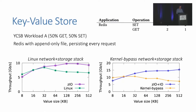Next, we run a key-value store with Redis. We run YCSB workload A with 50% get requests and 50% set requests. Redis is configured to use an append-only file and persist data after every request. Set requests do six copies in total and get requests do three copies in total. Zeo on top of Linux, eliminating in-application copies, achieves up to a 1.4x speedup as we increase the value size. With kernel bypass, we see up to a 2.2x speedup. Zeo with I/O stack integration eliminates additional copies at the I/O stack API.